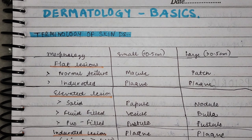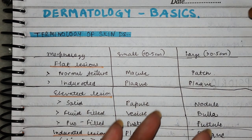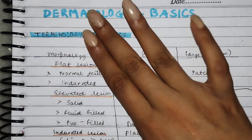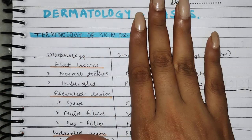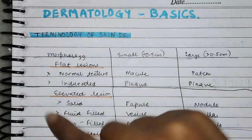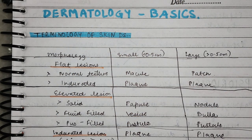First of all, the lesions — the skin lesions. These are three or four ways to classify them. First of all, the lesions are flat. When you touch them, you will feel flat. You may or may not feel it — to palpate it, you will feel flat. But with inspection, you will feel hyperpigmented. This is called a flat lesion.